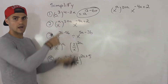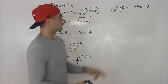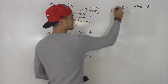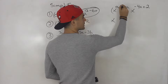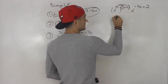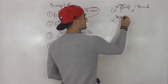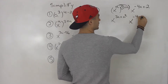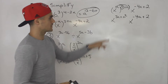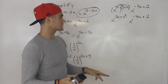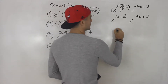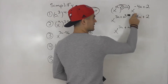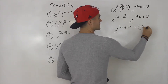Moving on to number two. We do the exact same thing that we did in number one. We're going to take this a, multiply it by the three plus a — this is in brackets, we got to distribute. So this would be x to the power of three a plus a squared. And then we're still multiplying by x to the negative four a plus two.